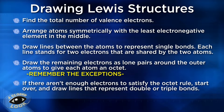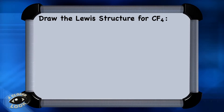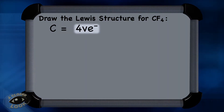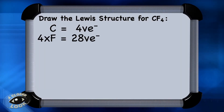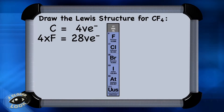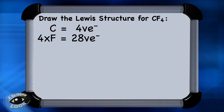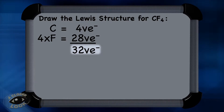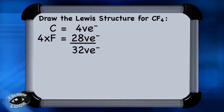Let's draw a Lewis structure for carbon tetrafluoride, CF4. First, tally the valence electrons. There is one carbon in this molecule, which contributes four valence electrons. There are four fluorines, which are in group 7, so they have seven valence electrons each, for a total of 28. Adding the four from carbon and the 28 from the fluorines gives a total of 32 electrons to place in the Lewis structure.